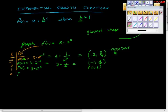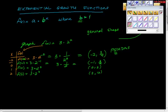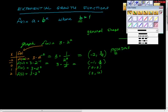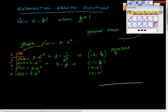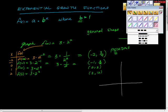Let's take f(2): that's 3 times 2 squared. Two squared is 4, and 3 times 4 is 12, giving us the point (2, 12). Now let's graph this on the Cartesian plane.